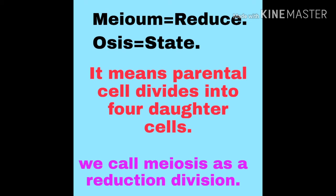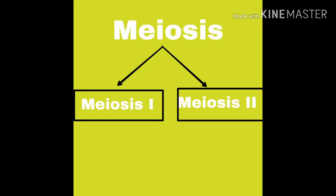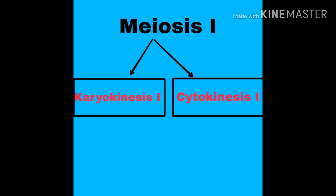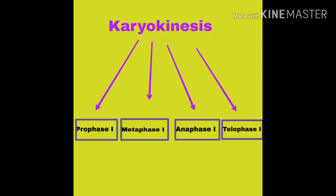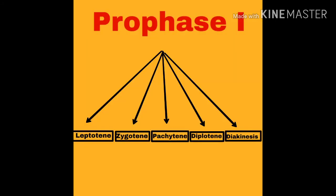इसलिए हम इसे reductional division भी कहते हैं। Meiosis के दो पार्ट पढ़ते हैं — meiosis one and meiosis two. Meiosis one is again divided into karyokinesis one and cytokinesis one. Karyokinesis के चार पार्ट पढ़ते हैं: prophase one, metaphase one, anaphase one, and telophase one.